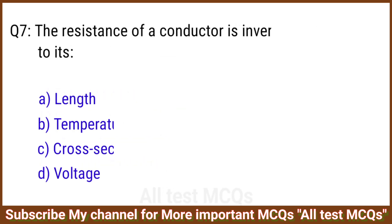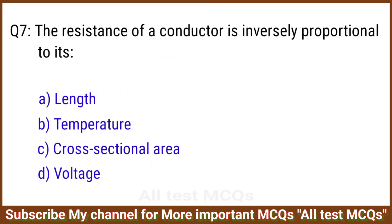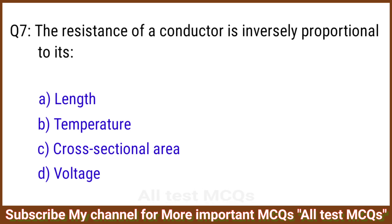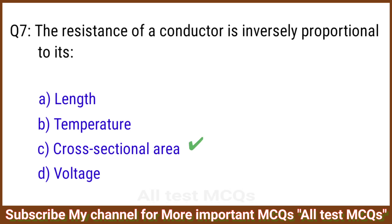Q7. The resistance of a conductor is inversely proportional to its? The right answer is option C: Cross-sectional area.